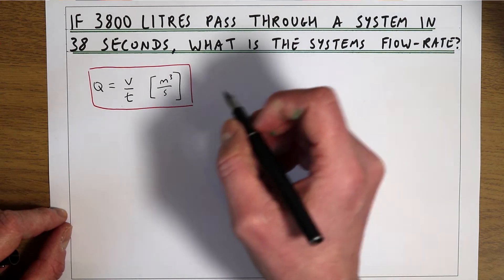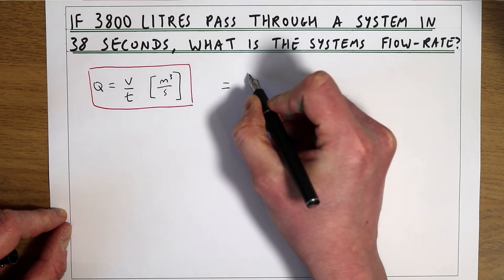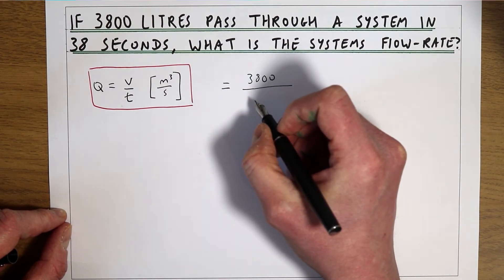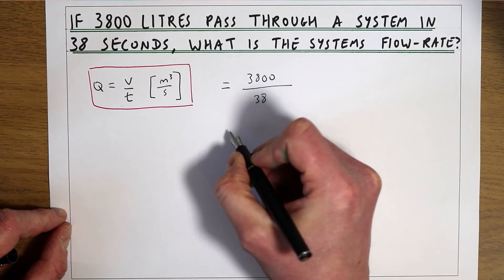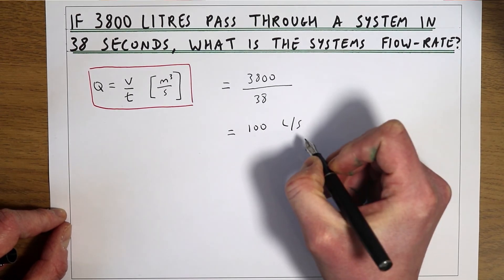To calculate the discharge or the flow rate we're just going to take the volume that's gone through so 3,800 divide it by the time that it's taken to go through so 38 seconds. What that gives us is a flow rate of 100 litres per second.